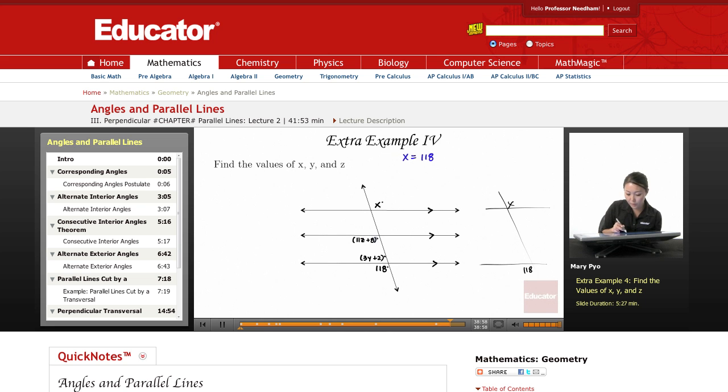The next one, let's look at z. So this one right here, 11z plus 8 is going to equal 118. Why? Because if I look at this line with this line and this transversal, they're going to be corresponding angles and then since the lines are parallel, corresponding postulate says that they're congruent. So, 11z plus 8 equals 118. If you subtract the 8, 11z equals 110. z equals 10.